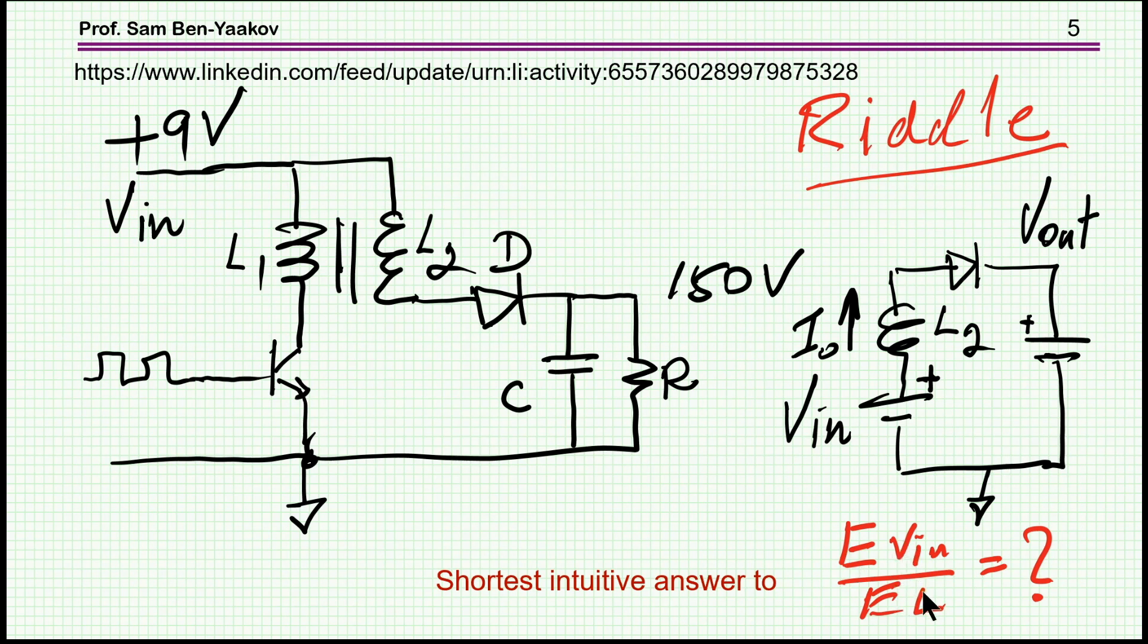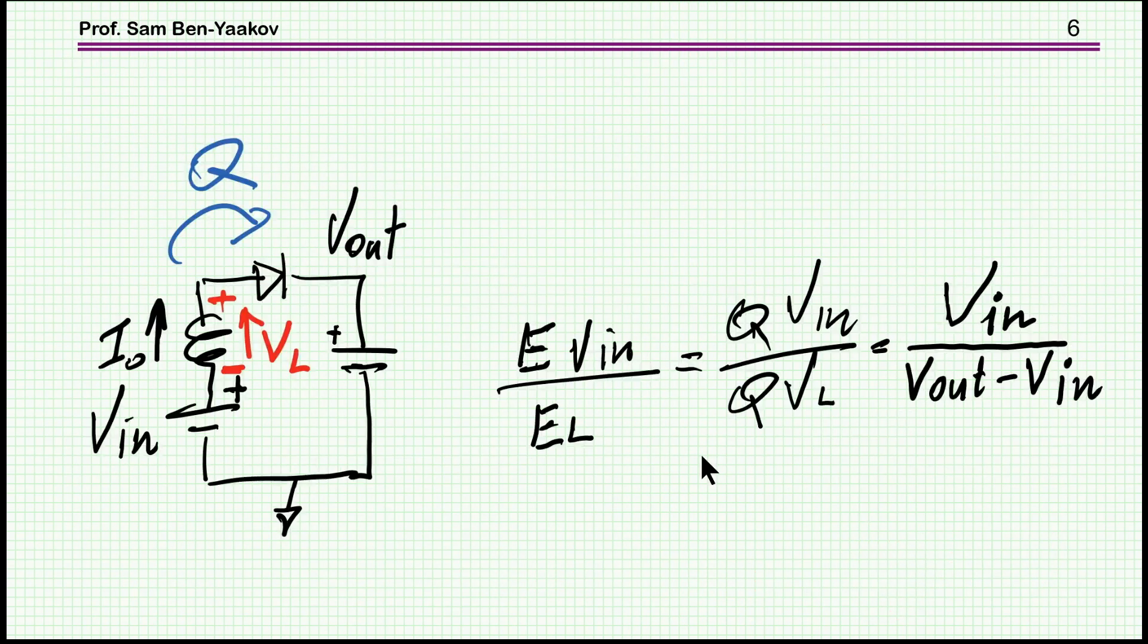So the question was, what is this ratio? Without going into too much detail of the shape of the current, triangular shape and the time it takes, et cetera. So here is the answer. The ratio between the energy is the voltage of V_in and the voltage drop on the inductor. The voltage drop of the inductor is V_out minus V_in. Why is that? Because during the discharge process, the charge is being moved from this branch to the output. And this is the same charge because it's passing through this branch.